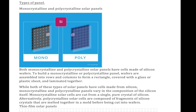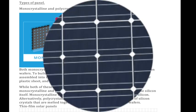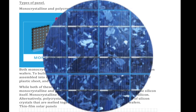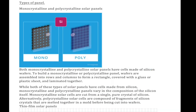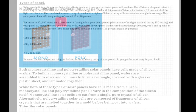So while these are both made from silicon, the panels actually vary in their composition. Monocrystalline cells are cut from a single pure crystal of silicon, and polycrystalline cells are composed of fragments of silicon crystals that are melted together in a mold before being cut into wafers. Because of this, their efficiency differs. Let's talk about efficiency.